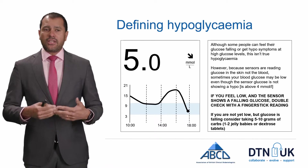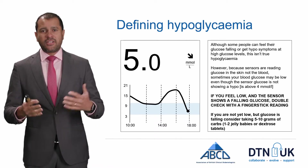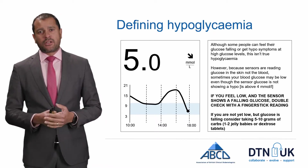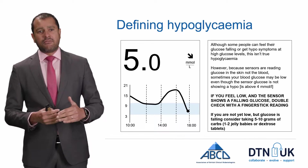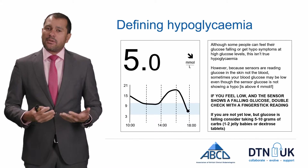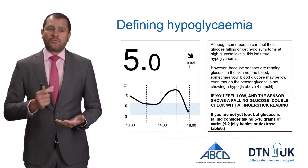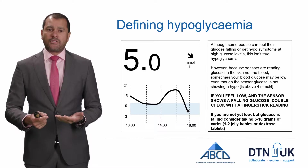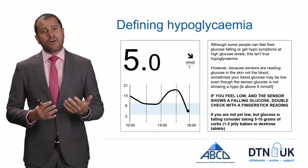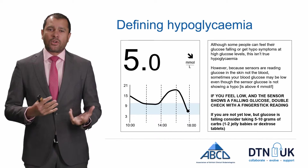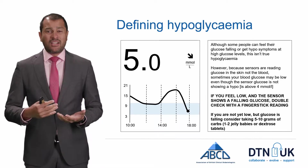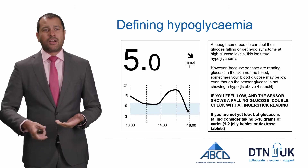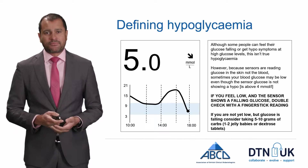If you're not yet low — for example where your blood glucose is showing a five with a down arrow — it might be useful to take a small dose of carbohydrate, maybe between five or ten grams, which would be about one or two jelly babies or dextrose tablets, with a view to preventing hypoglycemia.